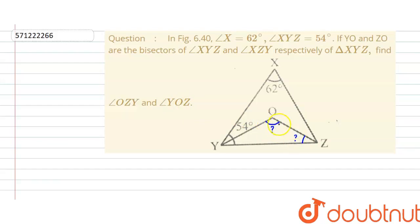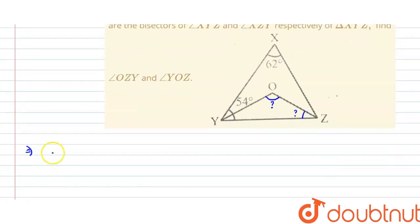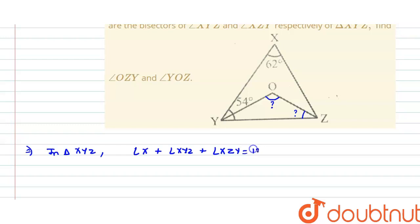These are the two angles we need to find, and we are given that angle X is 62 degrees and angle XYZ is 54 degrees. First, in triangle XYZ, angle X plus angle XYZ plus angle XZY equals 180 degrees, because of the angle sum property, which states that the sum of interior angles of a triangle is 180 degrees.